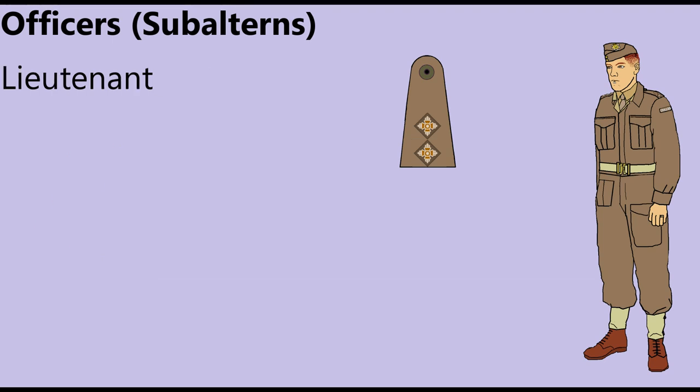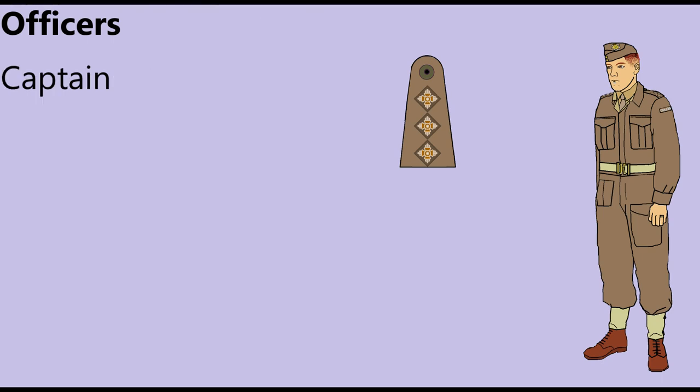Two rank stars designated a Lieutenant. In an infantry unit, an infantry platoon of 36 men was commanded by a lieutenant. A Captain wore three rank stars. In 1939, some companies, batteries, and squadrons were commanded by captains, and captains could also be found in various appointments, such as adjutant, intelligence officer, carrier or scout platoon commander, etc.